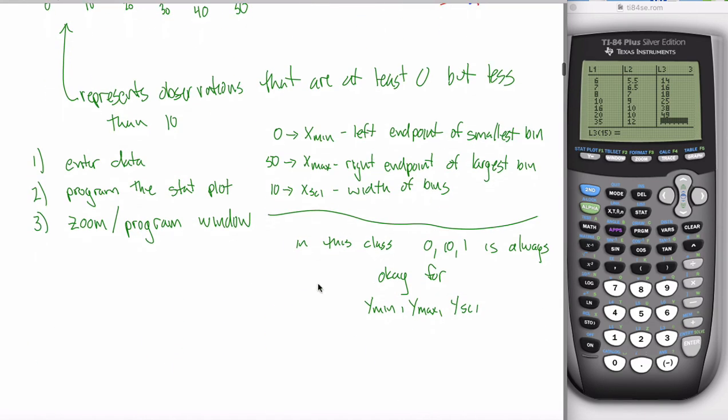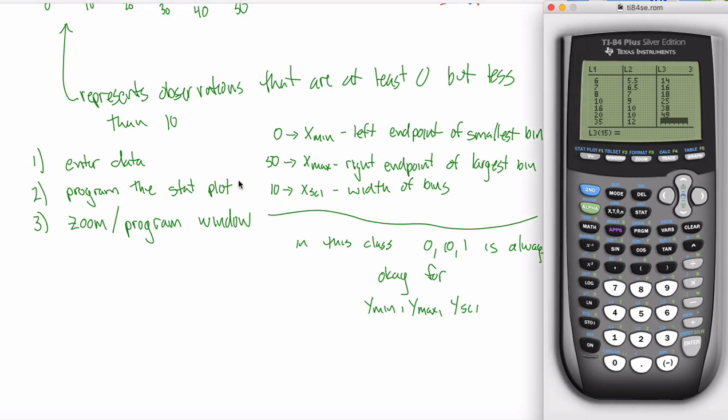So you got all this data. Every plot in this class, it's a three-step process. Your first step would be to enter the data into a list. Did that already. It's in L3.